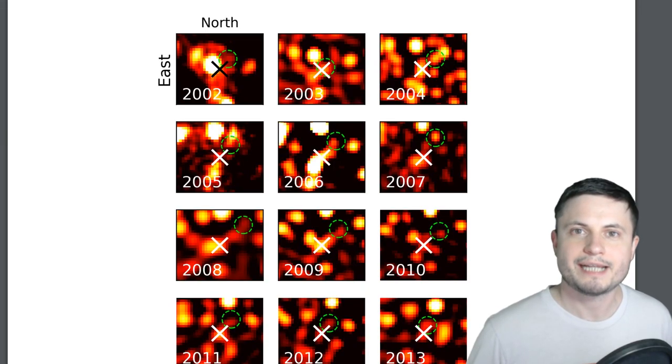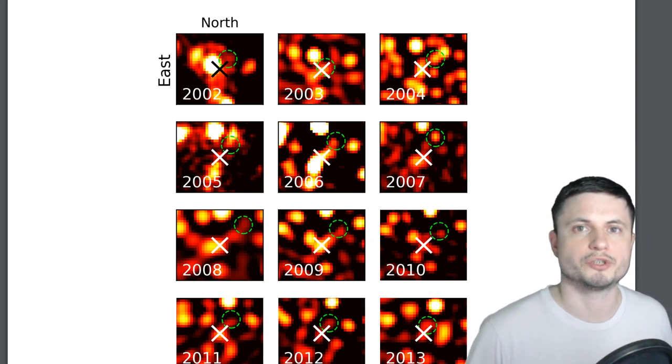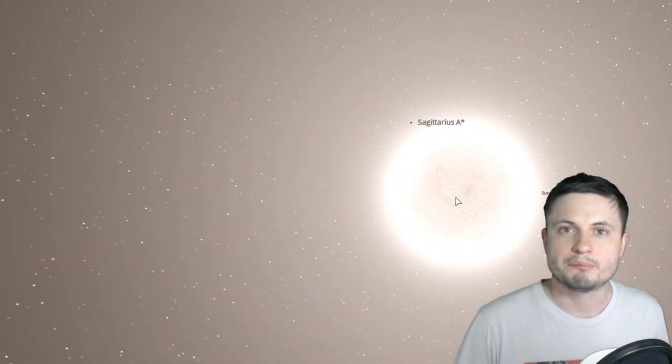But hopefully by studying S62 in a little bit more detail and by identifying specific features of this star that other stars might not have, we'll be able to answer the question of its origin. Now right now we don't actually even know what's going to happen to this star, but the chances for it to collide with something and probably even fall into the black hole are pretty high.